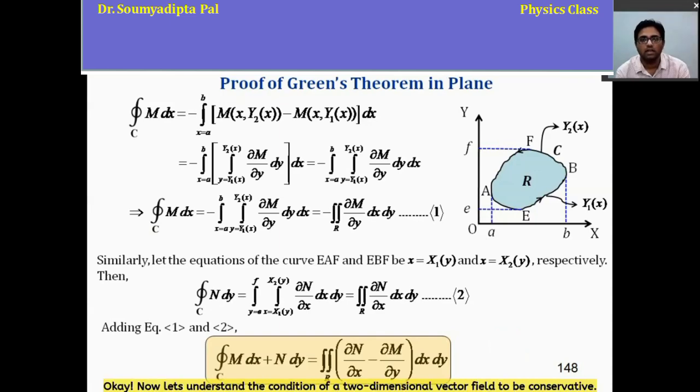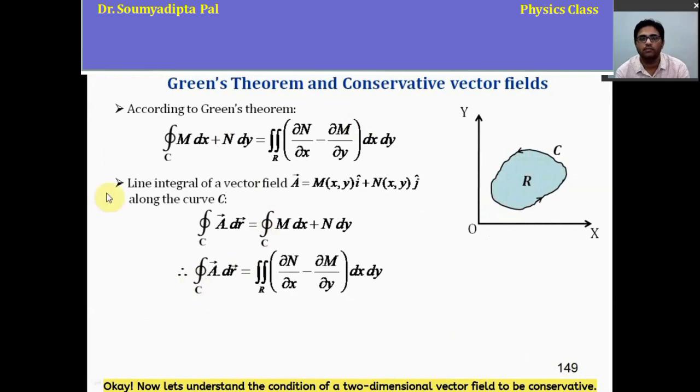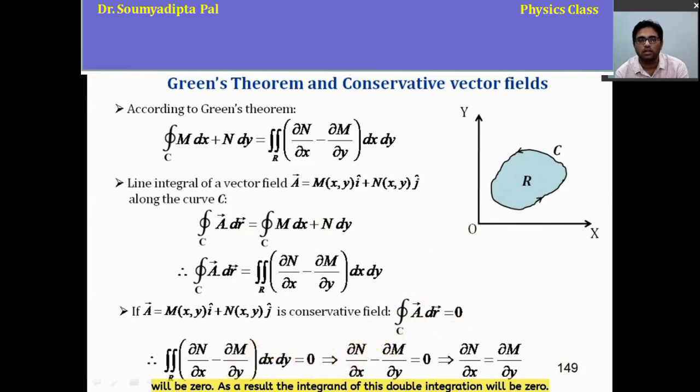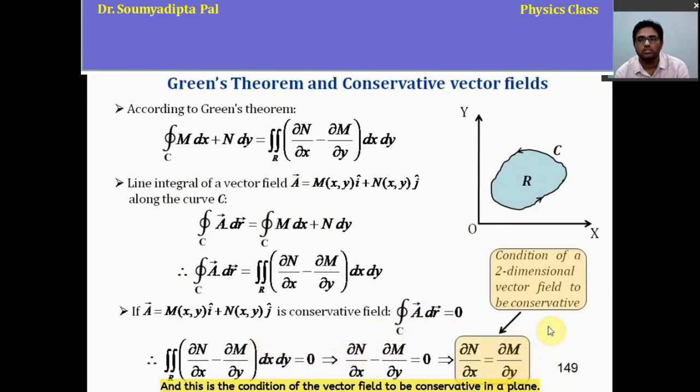Now, let us understand the condition of a two-dimensional vector field to be conservative. So, to do that, let us write the Green's theorem in terms of close line integration of A vector along the curved C. Now, if the vector field is conservative in nature, then we know close line integration of A vector along the curve will be 0. As a result, the integrand of this double integration will be 0. And this is the condition of the vector field to be conservative in a plane.